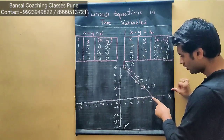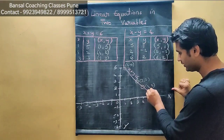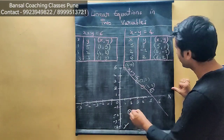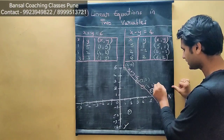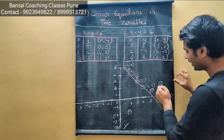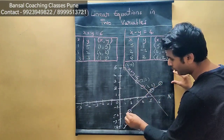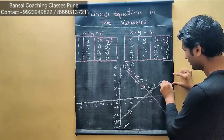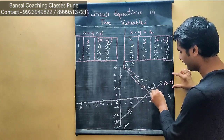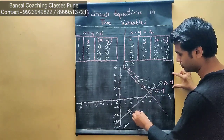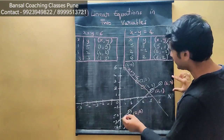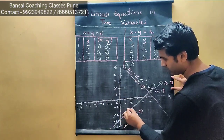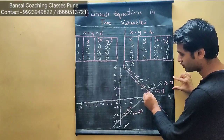Now plotting equation 2. Point (5, 1): x is 5, y is 1. Point (2, -2): x is 2, y is minus 2. Point (6, 2): x is 6, y is 2. If we join these, a straight line passes through all 3 — they are also collinear. We extend the line and write the equation: x minus y equals 4.